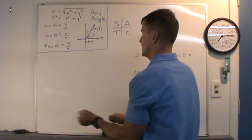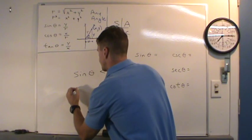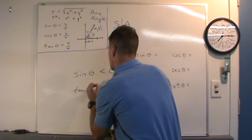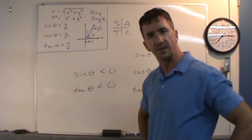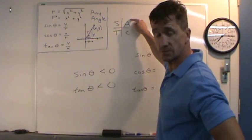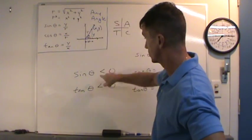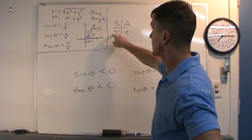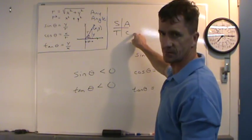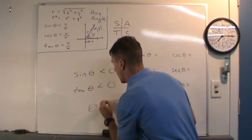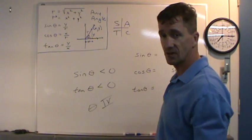First problem: let's say you're told that sine of theta is negative and tangent of theta is negative, and you've got to figure out what quadrant theta's in. It can't be quadrant 1 because all trig functions are positive there. It can't be quadrant 2 because sine is positive in quadrant 2. It can't be quadrant 3 because tangent is positive in quadrant 3. So it must be in quadrant 4 — the terminal side lies in quadrant 4.